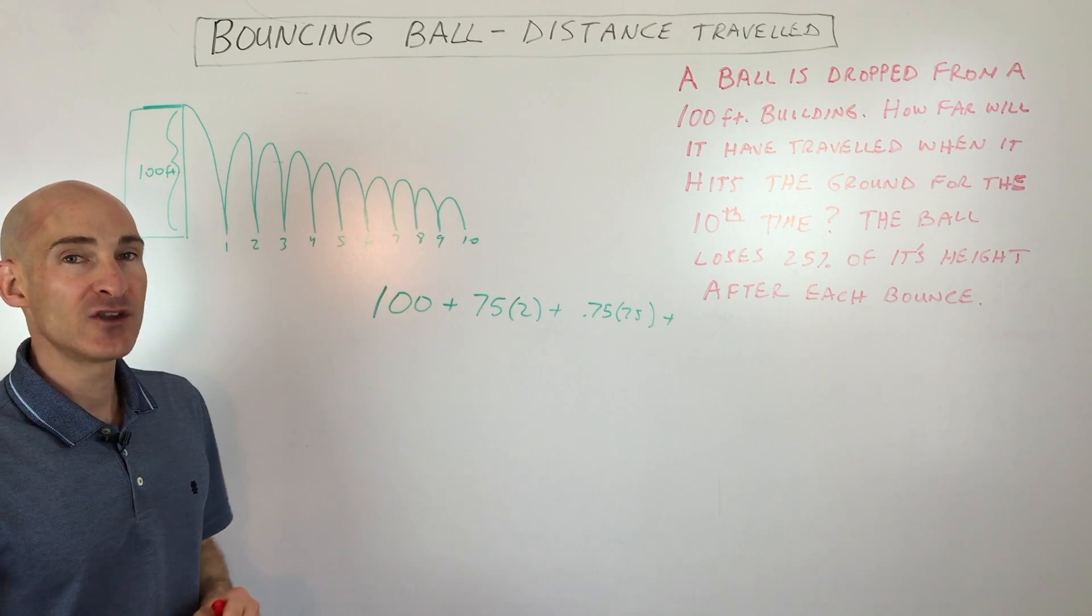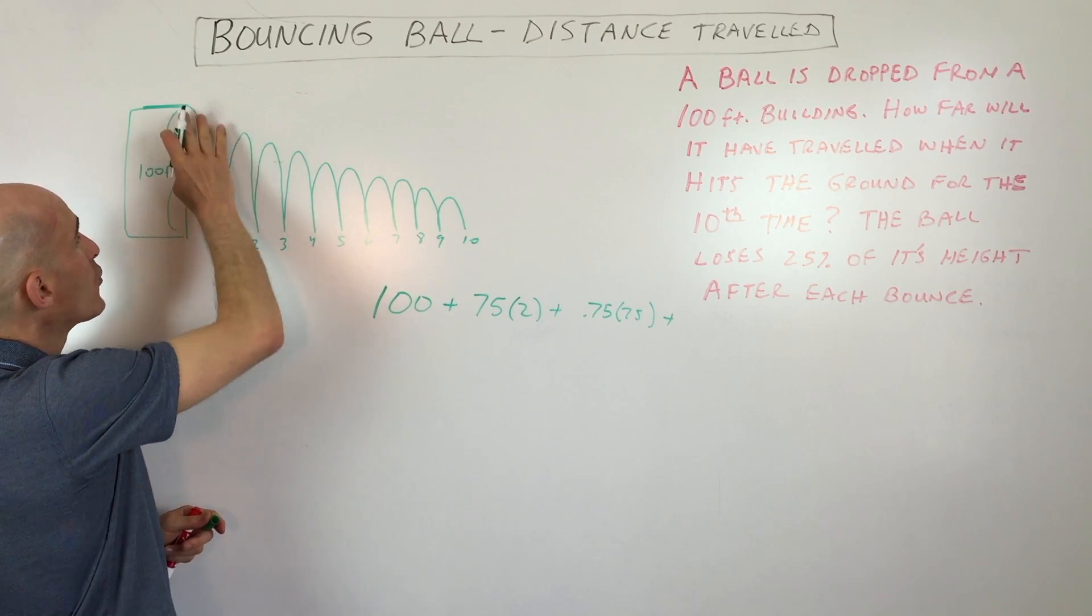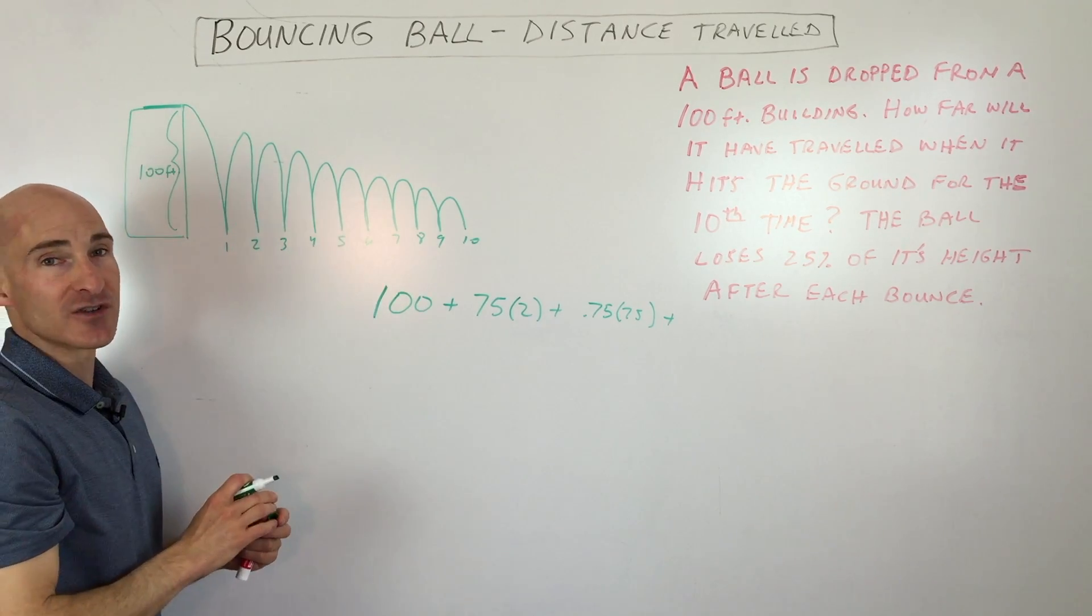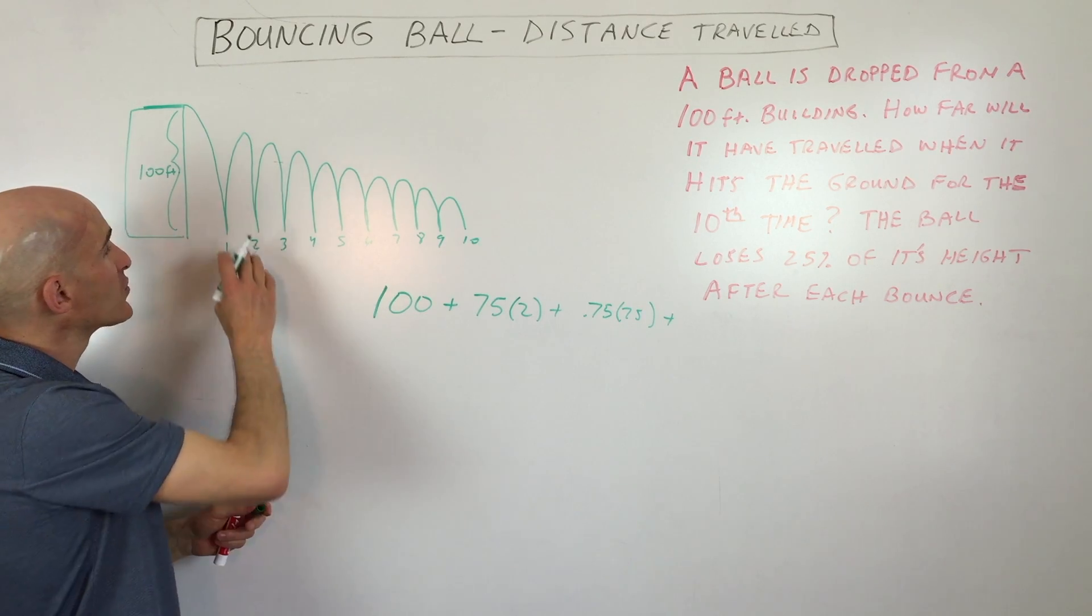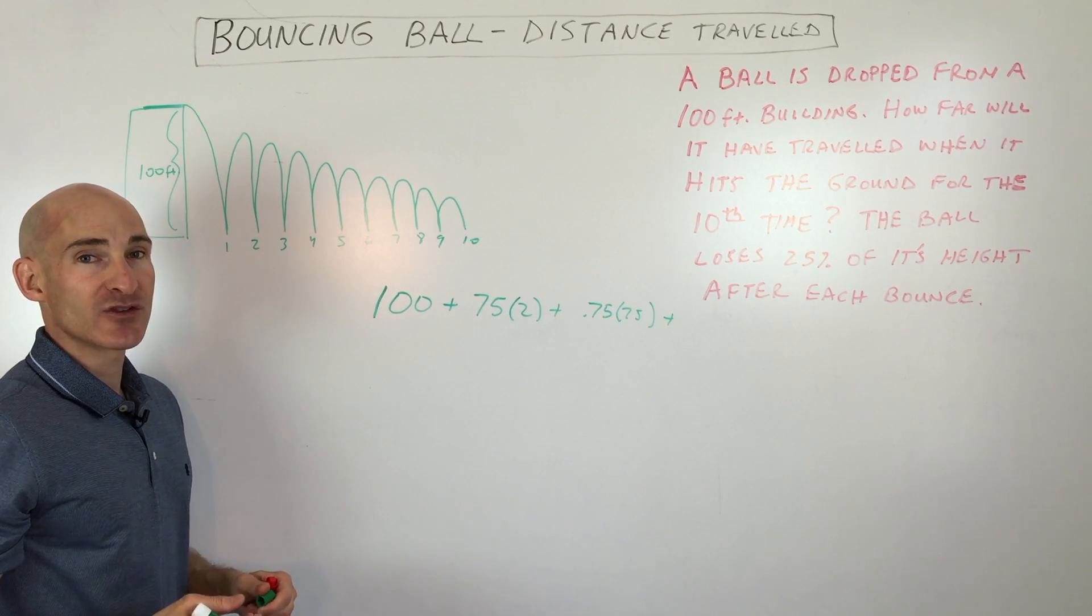So the way I recommend doing this problem is let's ignore the 100 feet when it initially falls. Okay, let's just work with these ones where it's going up and down. And what we're going to do is we're going to treat it as a geometric sequence.